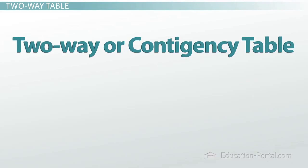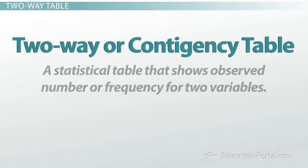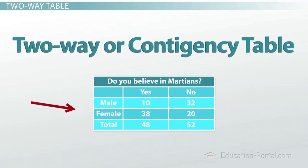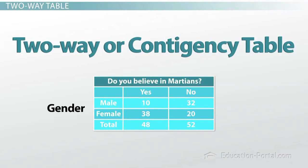A two-way or contingency table is a statistical table that shows observed number or frequency for two variables. The rows indicate one category and the columns indicate the other category. The row category in this example is gender — male or female. The column category is their choice — yes or no.